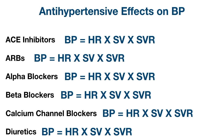Let's see what parts of the equation each class primarily affects. ACE inhibitors inhibit angiotensin converting enzyme from forming angiotensin II. Angiotensin II binds to blood vessels causing vasoconstriction, so with lower levels of angiotensin II we won't get as much vasoconstriction, decreasing systemic vascular resistance.